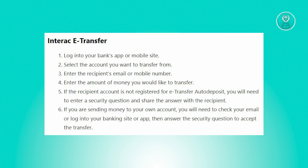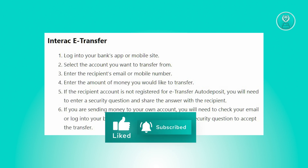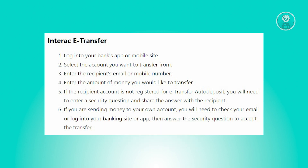First, you need to access your bank's app or mobile site. In this case, go ahead and open up the CIBC mobile app. From there, choose the account from which you wish to transfer funds, enter your recipient's email address or mobile number, and specify the amount you intend to transfer.